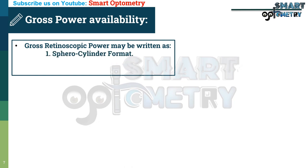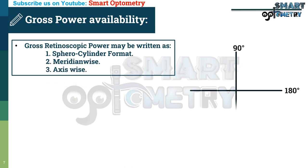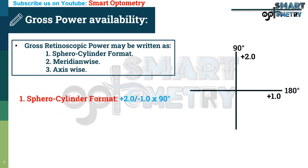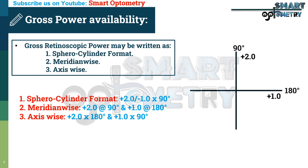Gross retinoscopic power can be written in three formats: (1) spherocylinder format, (2) meridian-wise format, and (3) axis-wise format. For example, if the optical cross shows plus 2 in the vertical meridian and plus 1 in the horizontal meridian, in spherocylinder format it is plus 2 minus 1 axis 90°; in meridian-wise format it is plus 2 at 90° meridian and plus 1 at 180° meridian; in axis-wise format it is plus 2 at 180° axis and plus 1 at 90° axis.